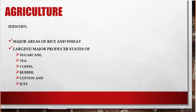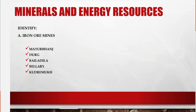Next one is Agriculture. Here you have to identify the major areas of rice and wheat. Then the largest major producer states of sugarcane, tea, coffee, rubber, cotton, and jute.